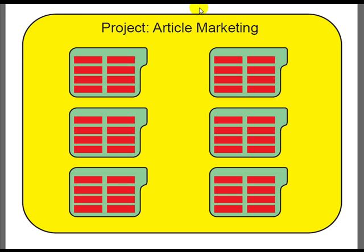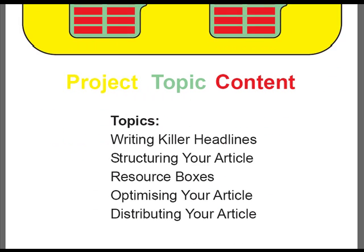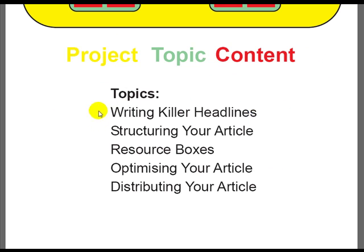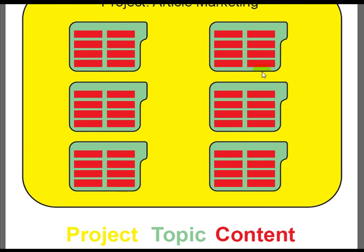Once you've created a project name in your account, you then add topics. You create one topic at a time, give it a name, and this is indicated here by the green folders — each one is one topic. In this example it shows six topics. To give you an idea of how you would label a topic, we've got: writing killer headlines, structuring your article, resource boxes, optimising your article, and distributing your article. Each of these names applies to one of these topic folders.